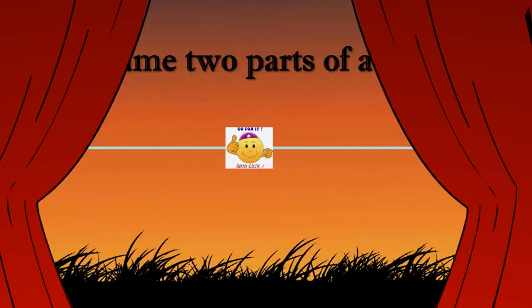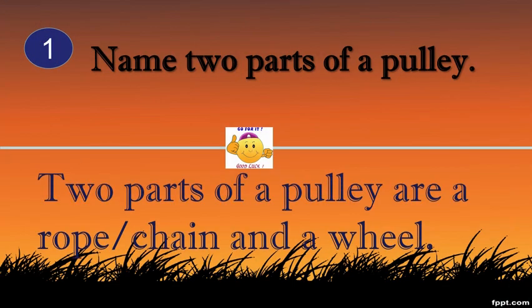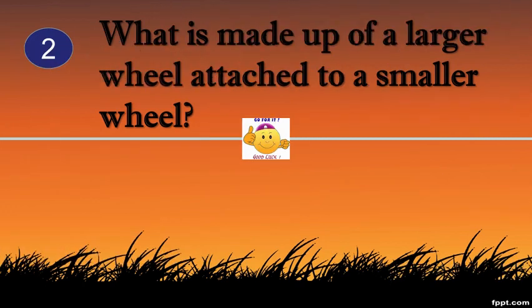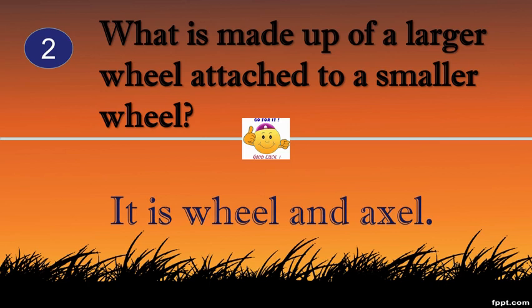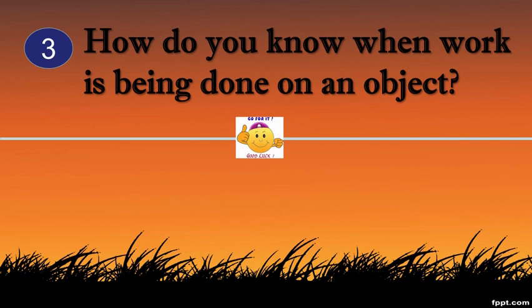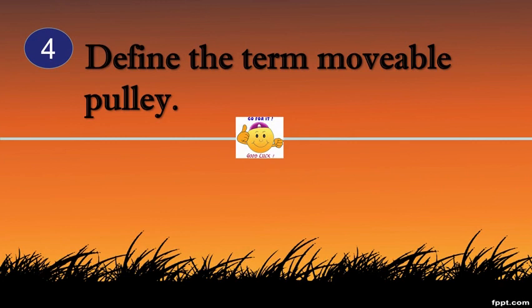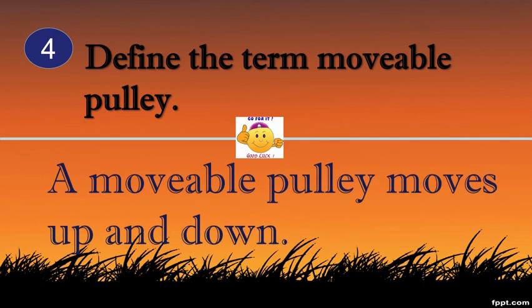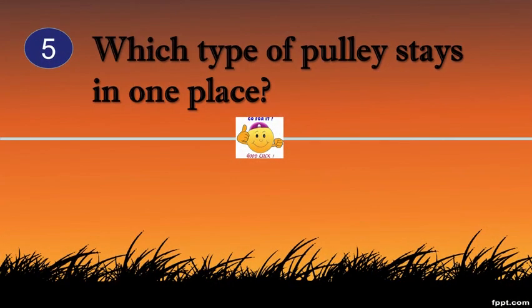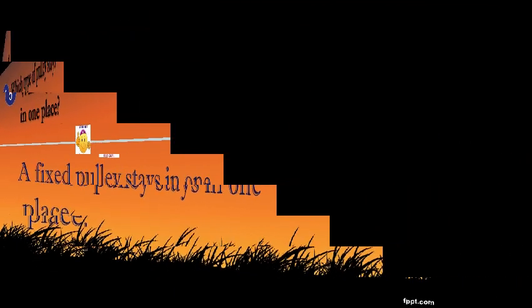Name two parts of a pulley. Two parts of a pulley are a rope, chain, and a wheel. You are correct. What is made up of a larger wheel attached to a smaller wheel? It is wheel and axle. You are correct. How do you know when work is being done on an object? The force moves the object through a distance. You are correct. Define the term movable pulley. A movable pulley moves up and down. You are correct. Which type of pulley stays in one place? A fixed pulley stays in one place. You are correct.